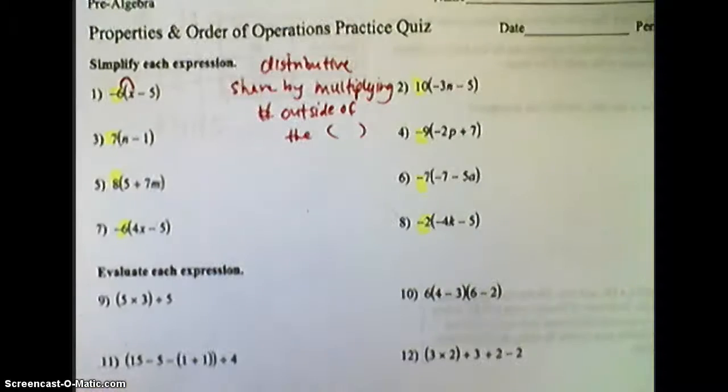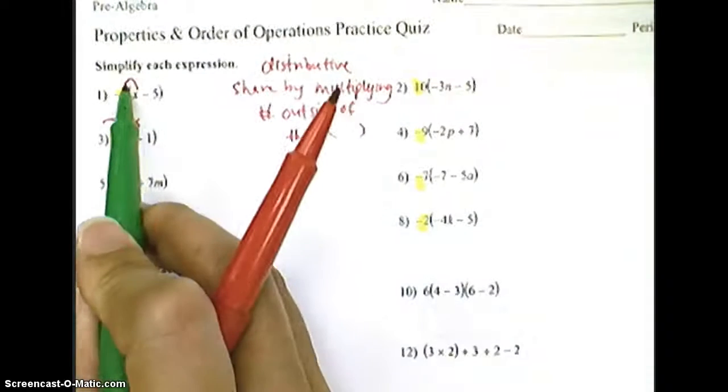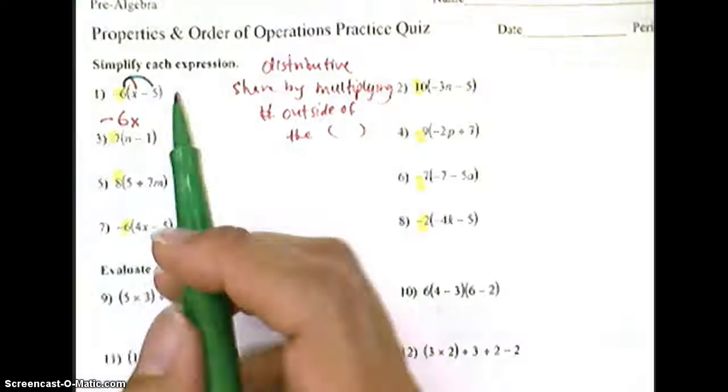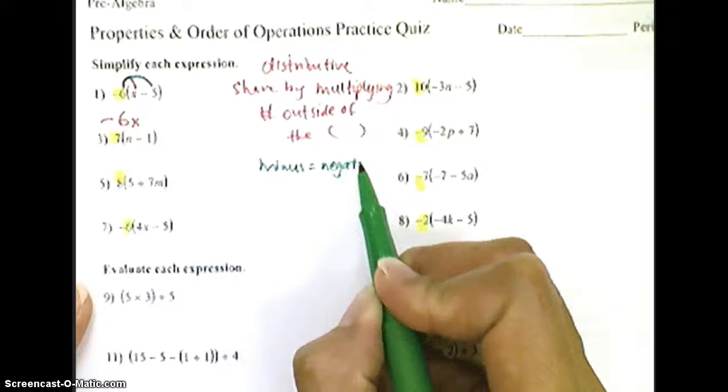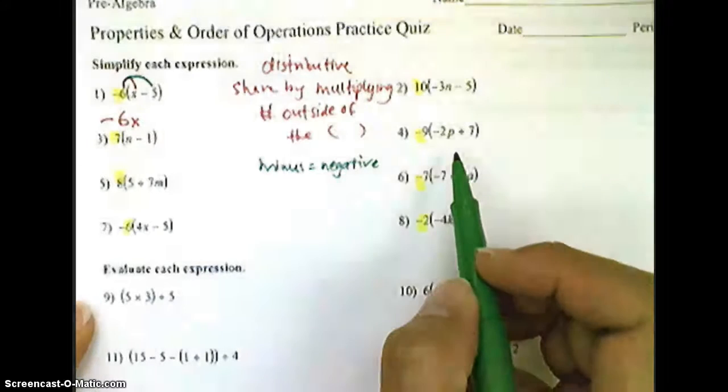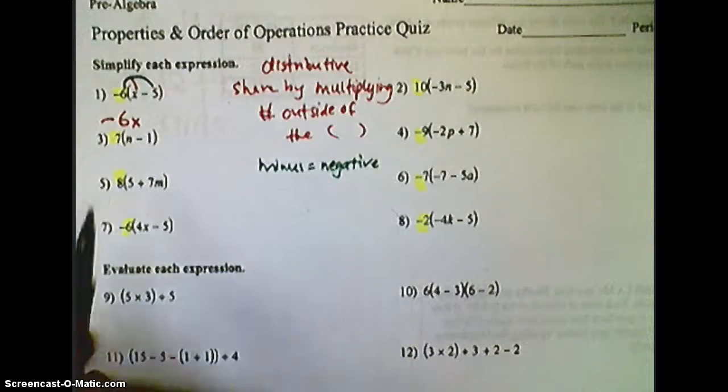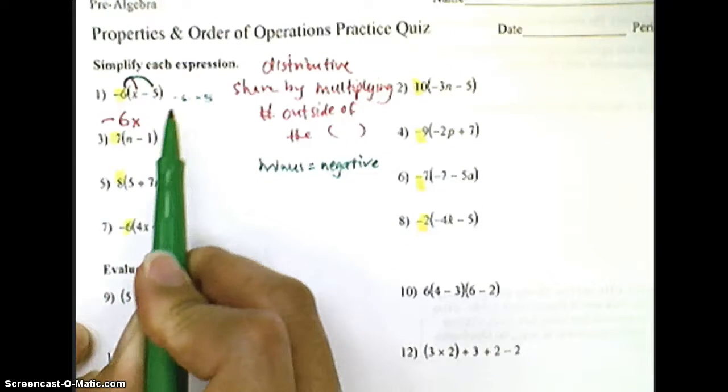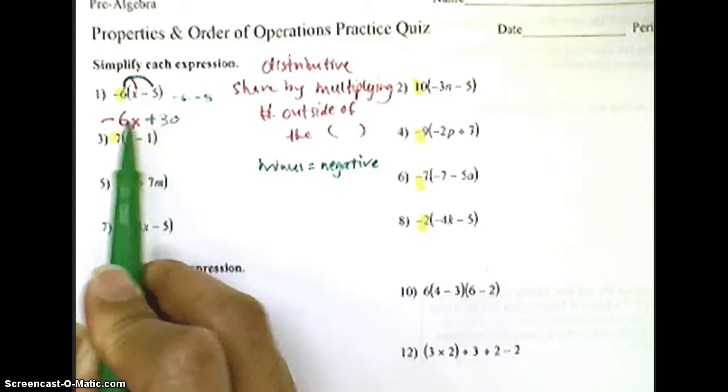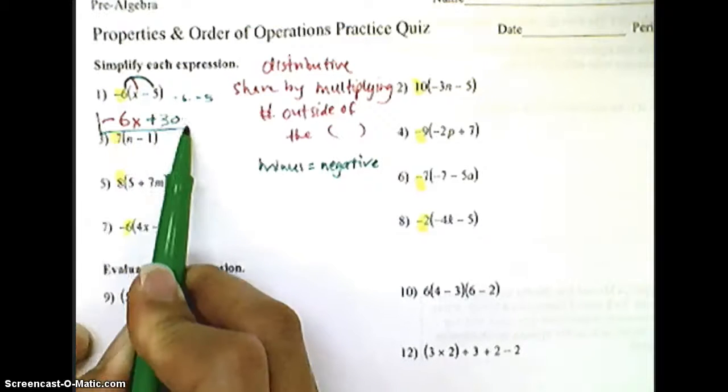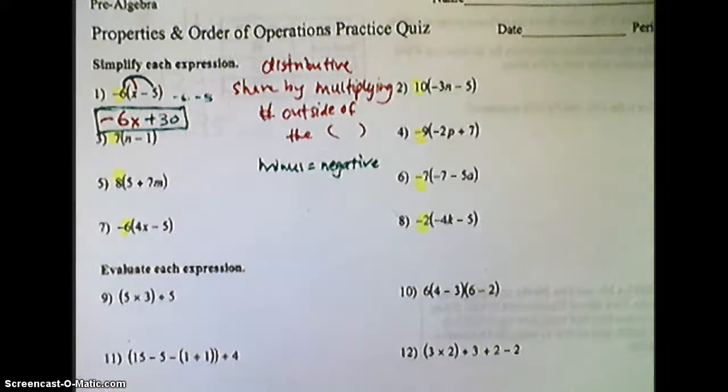In distributive property, you share by multiplying the number on the outside of the parentheses. So this here would be negative 6. What I've done is now highlighted for you all the numbers on the outside of the parentheses. So I'm going to do a couple rainbows. I'm going to do negative 6 times x, and when I do the first arrow rainbow, I would multiply that, I would get negative 6x. Then I would do a second arrow, negative 6 times negative 5.